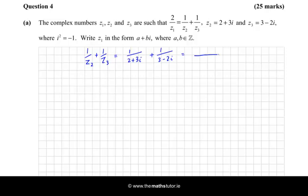So my common denominator is the product of those two, and on the top I will have 1 times 3 minus 2i plus 1 times 2 plus 3i. So now all I'm going to do is multiply that out. On the top I just get 3 minus 2i plus 2 plus 3i.